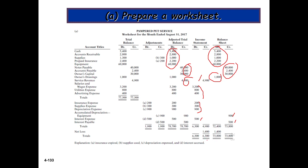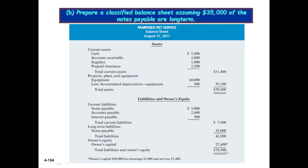After balancing the income statement, the total is $6,300. The expense side is greater, so the difference of $1,400 is our net loss figure. This net loss will be transferred to the balance sheet asset side, and then both sides of the balance sheet are equal.